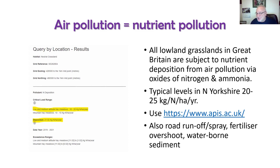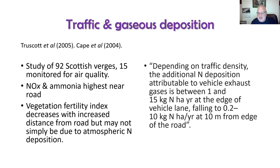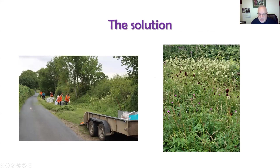Spray from roads can add nutrients and other nasties; fertilizer overshoot from farm spinners can carry pellets over the hedge; nutrients can also arrive with flood water. That ambient 20–25 kg of nitrogen per year applies everywhere, but if you're next to a road you get an additional dose. One study in Scotland showed that if you're within 10 metres of the road you could be getting up to 15 kilograms of extra nitrogen just from exhaust gas.